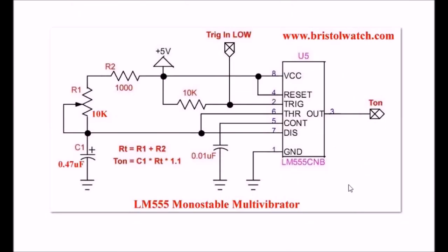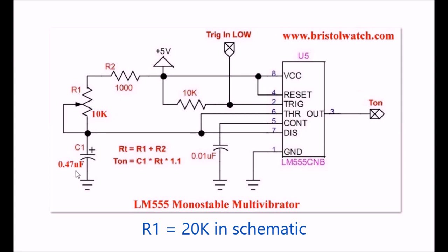Here is the monostable multivibrator circuit again using the LM555, but with some changes. There is no switch; the trigger now comes from the zero crossing pulses into pin 2. The value of R1 has been changed to 10K and C1 to 0.47 microfarads. This gives a range with these component values of approximately 0 to 10 milliseconds — more than enough, since we need 0 to above 8.33 milliseconds.